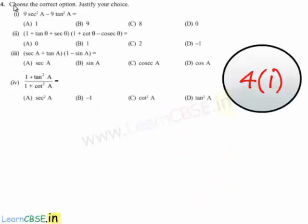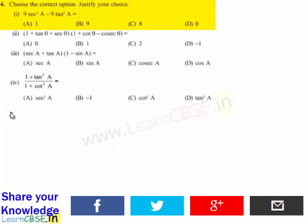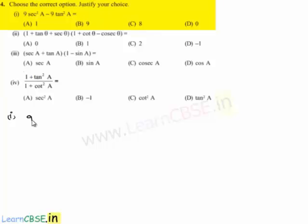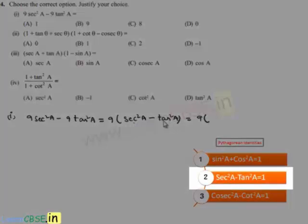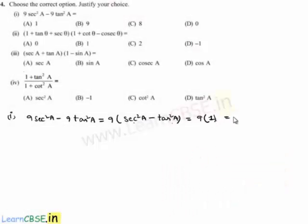Moving on to the fourth question: choose the correct option and justify your choice. Moving on to the first bit. The given expression is 9 sec² a minus 9 tan² a. Taking 9 common, we get 9(sec² a - tan² a). Using the identity sec² a - tan² a = 1, this equals 9 times 1 which is equal to 9. So option b is correct for the first one.